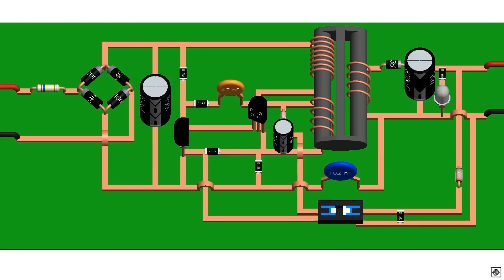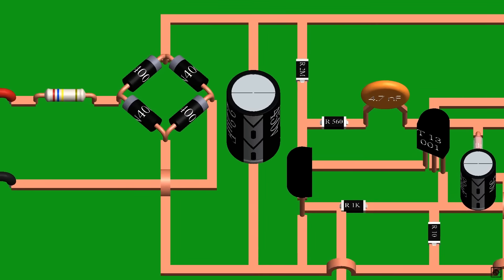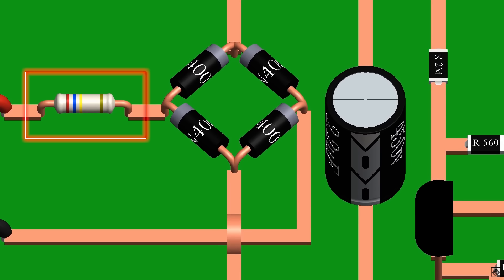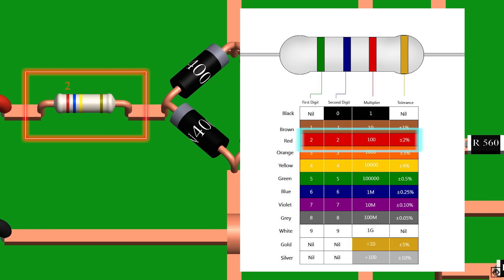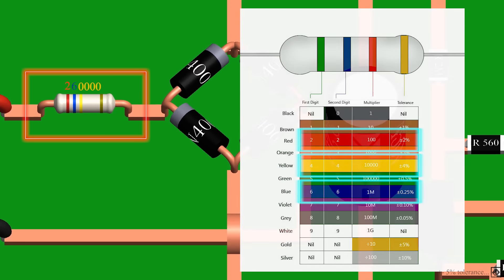Now we can see all the components and connections. This red wire is phase wire and the black is neutral. First, we have a resistor. By observing the color bands and reference table we can see it's 260 kilohms.